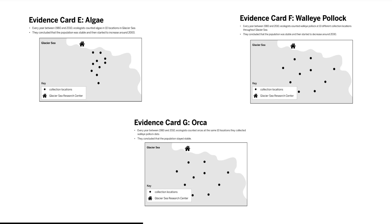The weakest evidence: although the algae data was also counted at 10 locations, these locations were not spread out throughout the Glacier Sea, so the sample represents less of the whole population. All three evidence cards represent the entire population to some degree, so none of the evidence cards needs to be thrown out. Comparing with evidence cards from lesson 2.7, we should conclude that evidence cards E, F, and G represent more of the whole populations than evidence cards C and D.